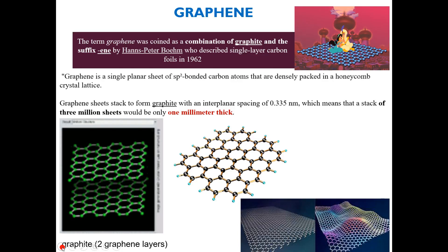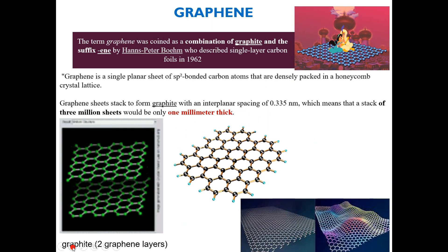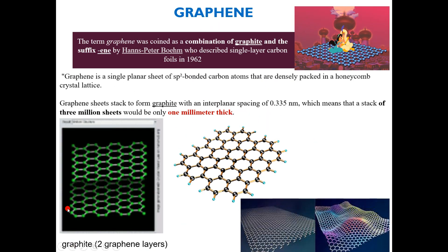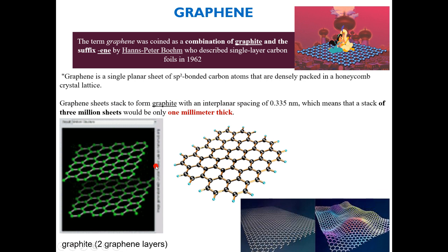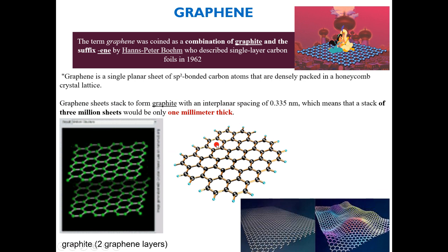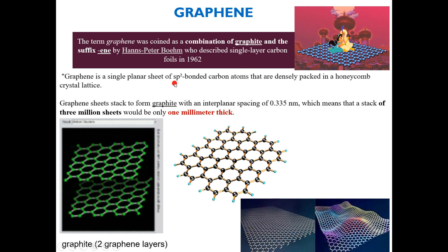Graphene is one example of carbon nanomaterials, just like CNTs and fullerenes — these are allotropes of carbon. Carbon is a very useful material in terms of nanomaterials. Graphene is like a single sheet of graphite; graphite has many hexagonal sheets attached to each other. Graphene is a single layer, and as you can see, it has a honeycomb-like crystal structure made of many hexagons stacked together.